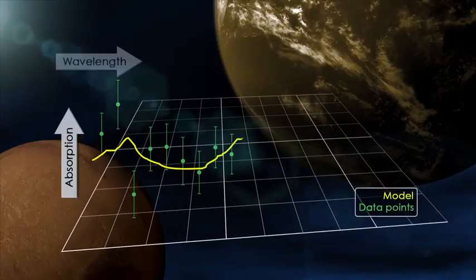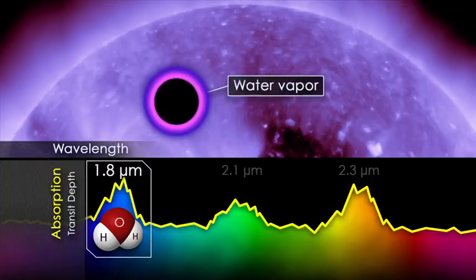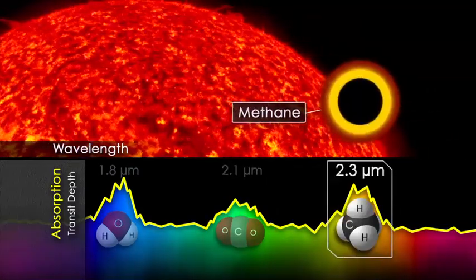Measuring the depth of absorption at each wavelength gives astronomers the planet's transit depth curve, which allows them to model the composition, height, and density of the atmosphere, providing a detailed picture of the planet.